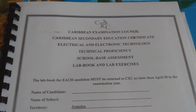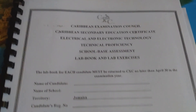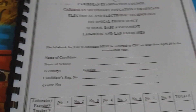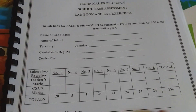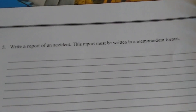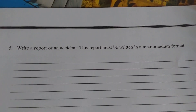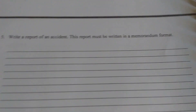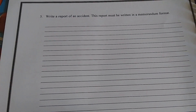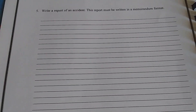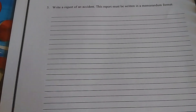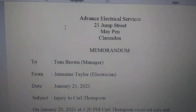Here in the electrical technology SBA booklet, we're going to look at how we can write the accident report. We're going to move on to the section of the booklet that requires us to write the accident report. The topic is: write a report of an accident. This report must be written in a memo format, and this is the space where you would have written the report. We're now going to look at how you can write this accident report. Here we have a sample accident report written in the memorandum format.